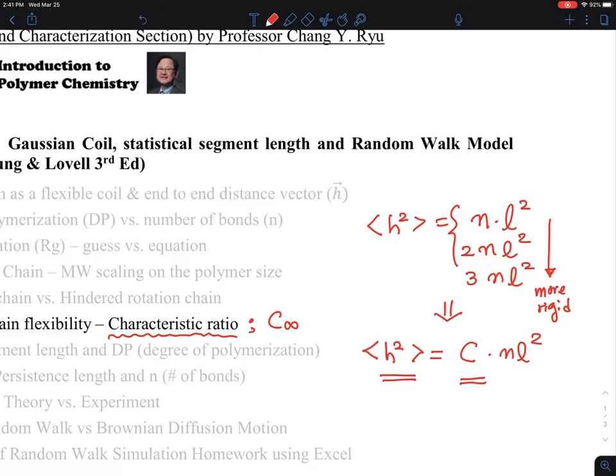And there's a little subscript that people put it in as C∞, because actually the C value itself depends on the number of bonds. And when you have a sufficiently large number, when N goes to infinity, this approaches an asymptotic value. So that's why this is being used in that way.